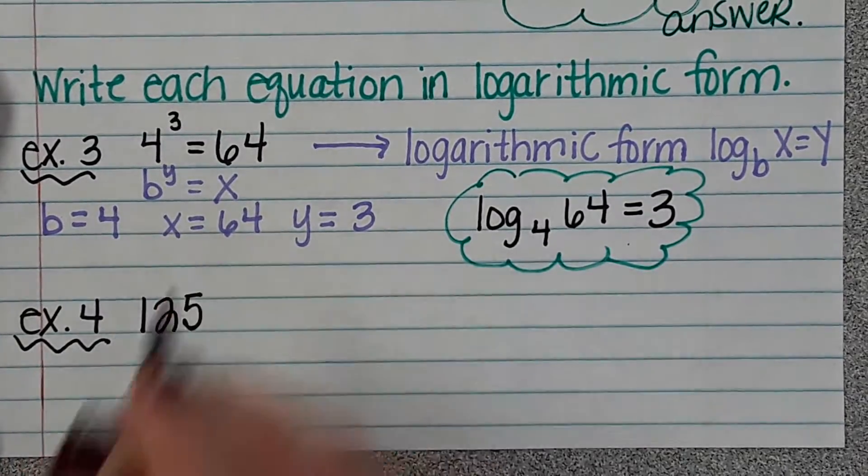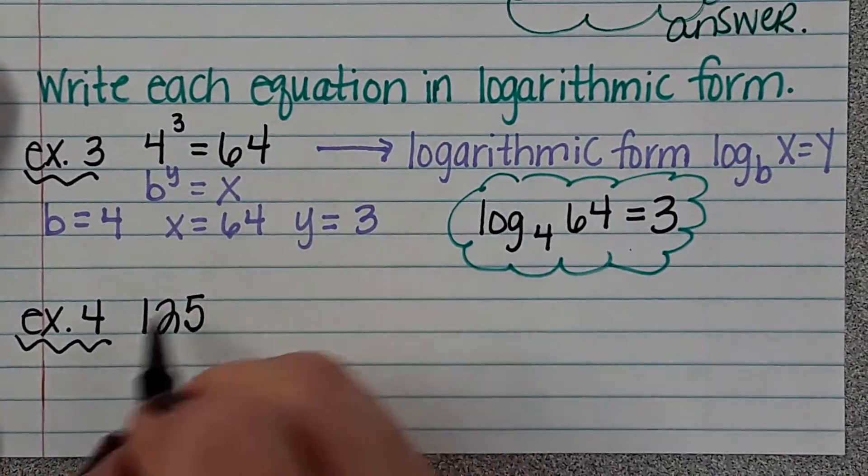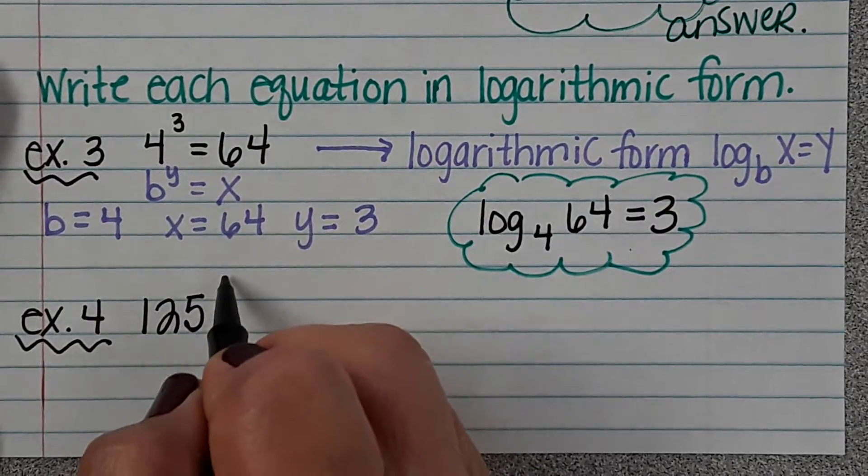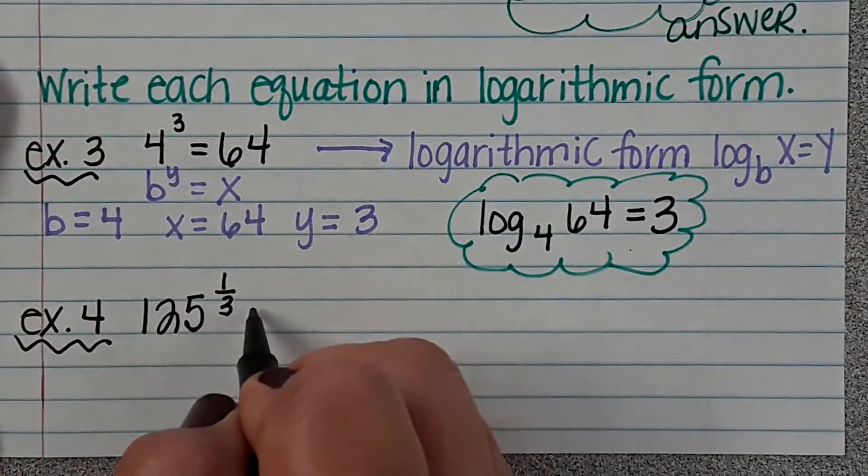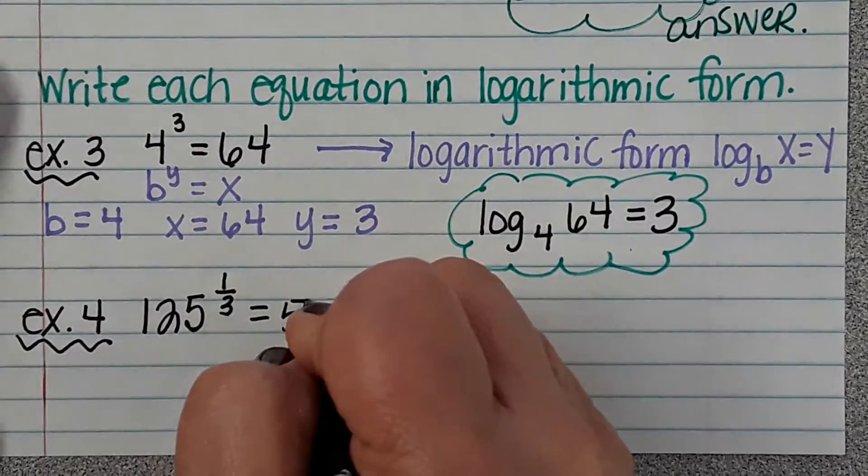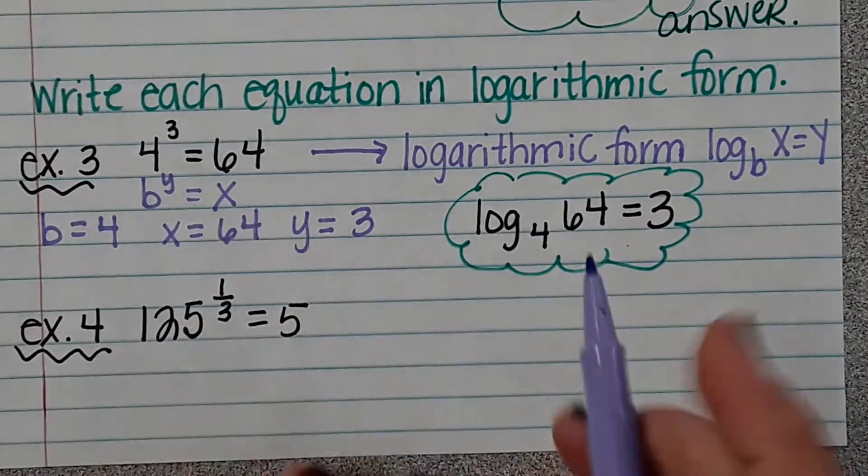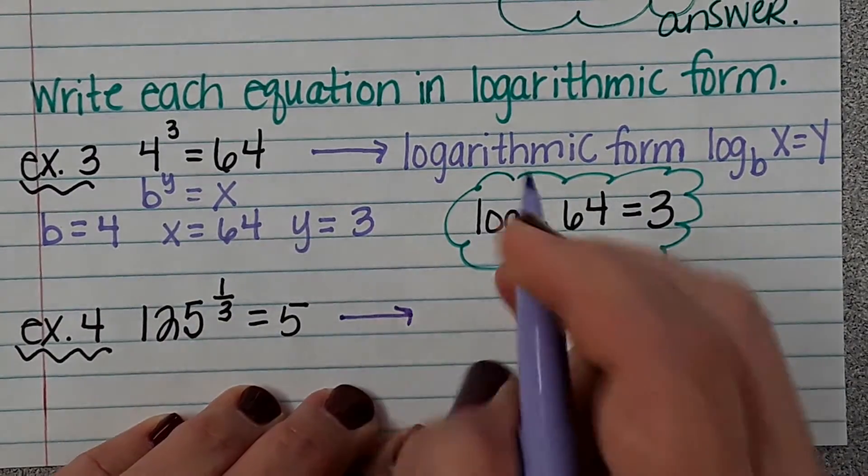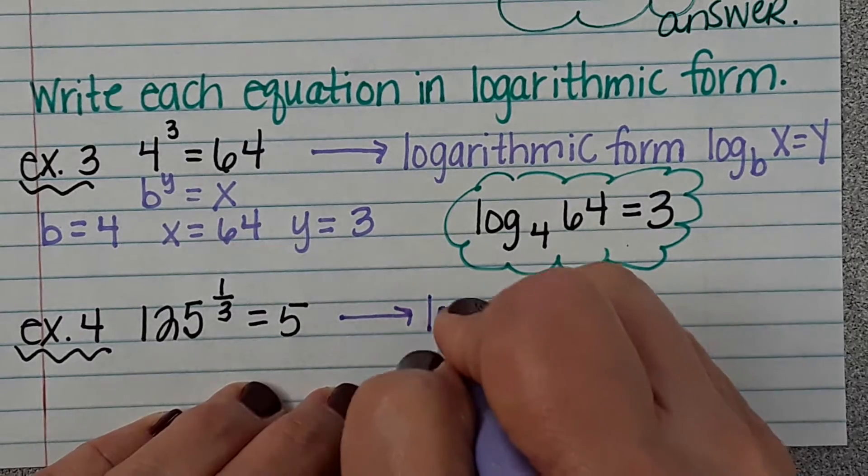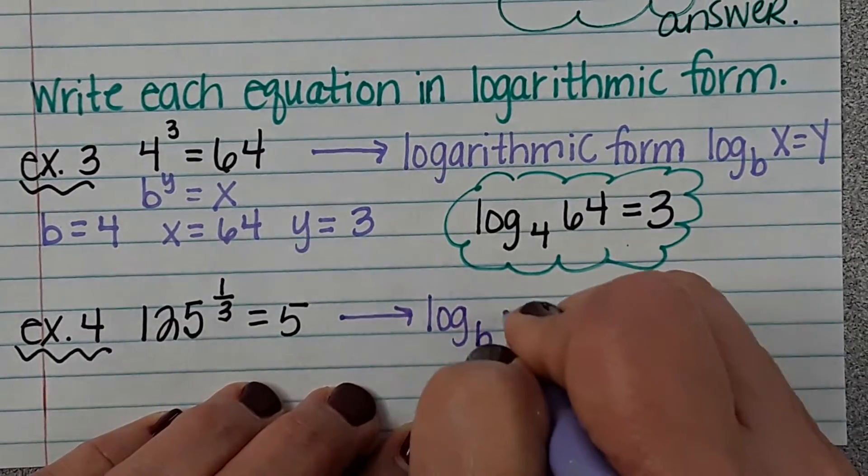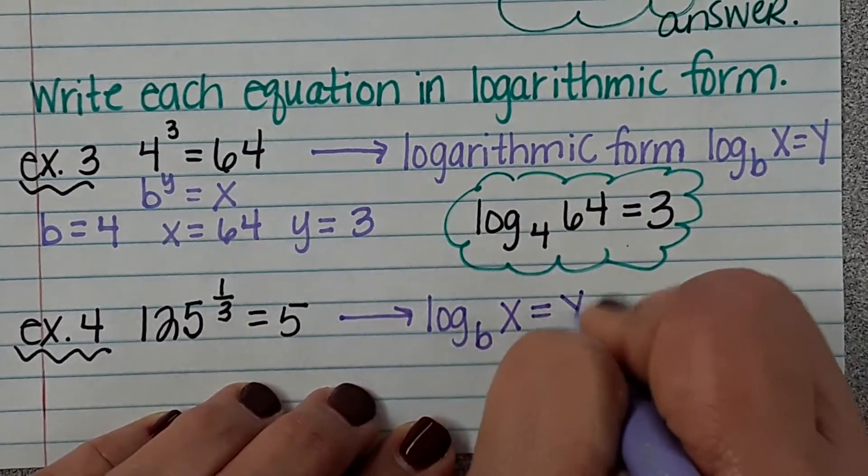So example 4 is 125 to the 1/3 power equals 5. We want to write it in logarithmic form, which is log base b of x equals y.